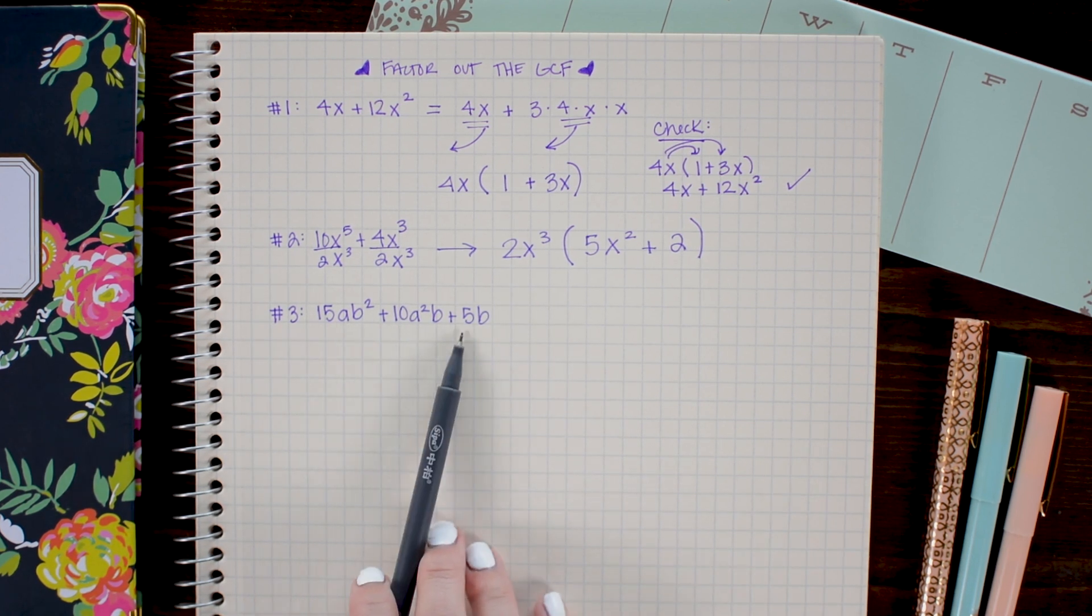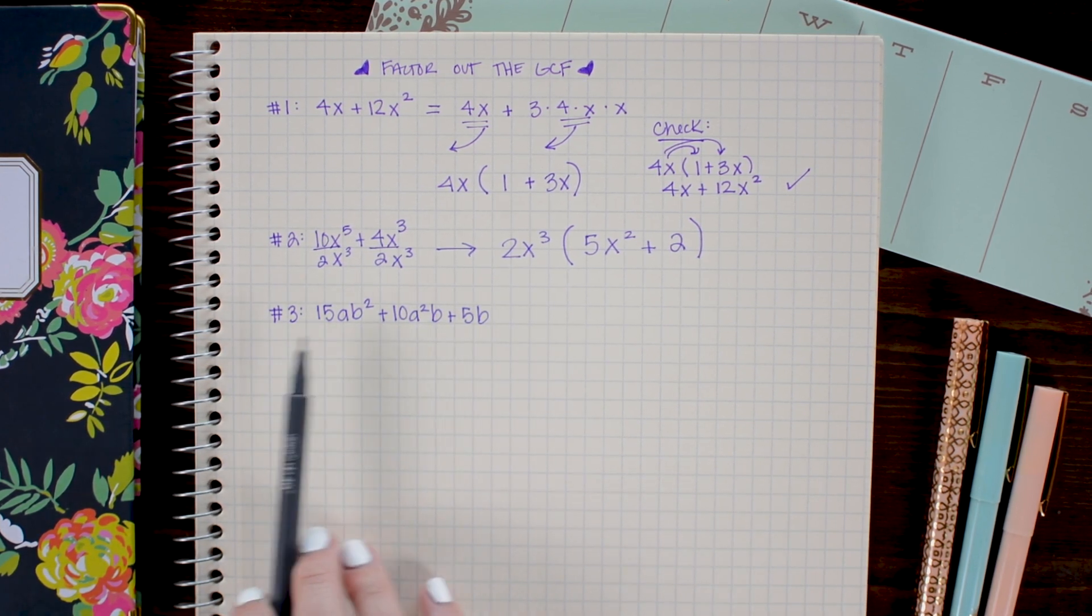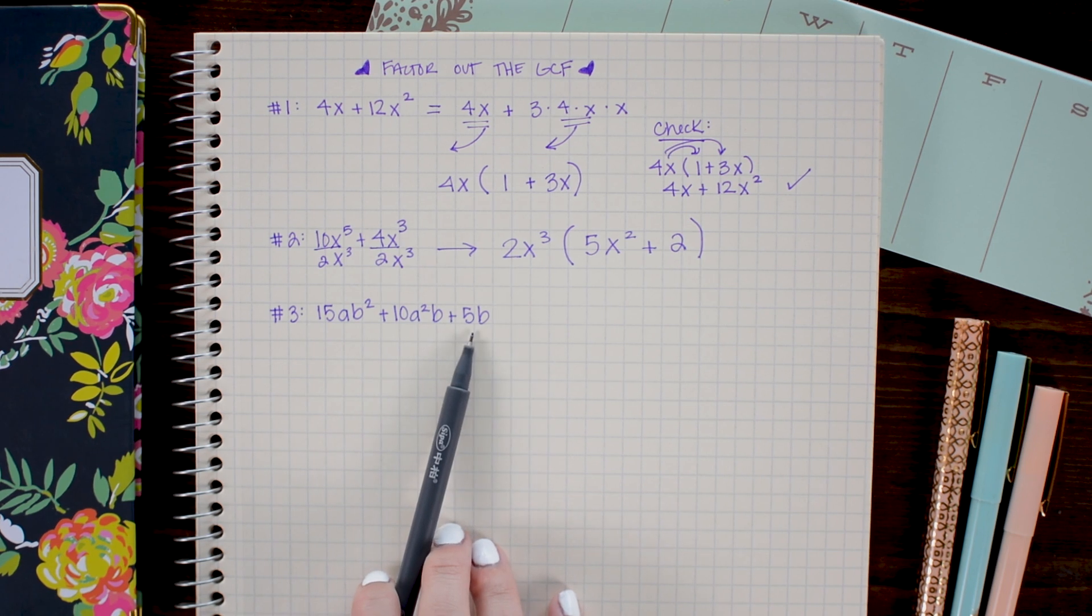I have 15, 10, and 5. So I see that all three of these are divisible by 5. So that is the first thing I'm going to divide out.